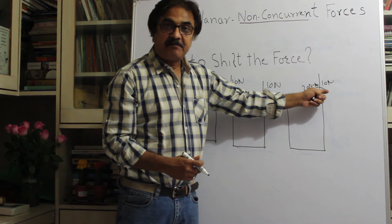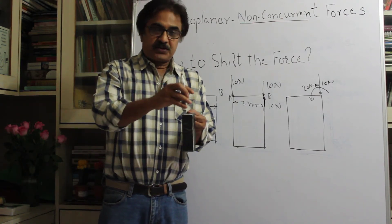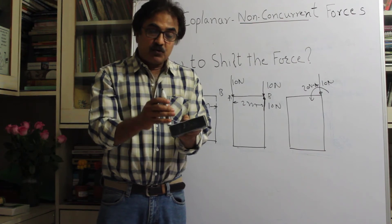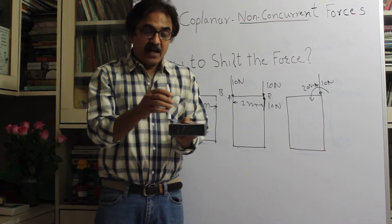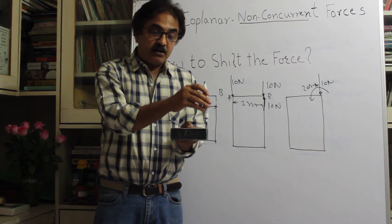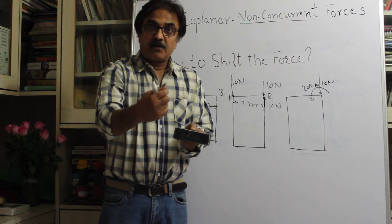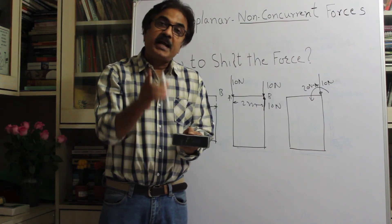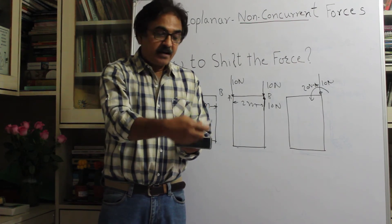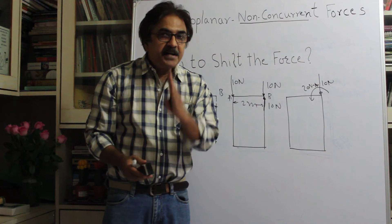To make it clear physically: imagine this body is unsupported and I apply a force. The effect of that force is to push the body downward and also to turn it counter-clockwise. When I shift the force from one edge to the other, I need to retain that earlier effect. If I just shift the force without correction the turning would become clockwise, which is not equivalent. So I apply the force at the new point and also apply a counter-clockwise turning moment — in this case 20 newton-meters — to retain the original effect.